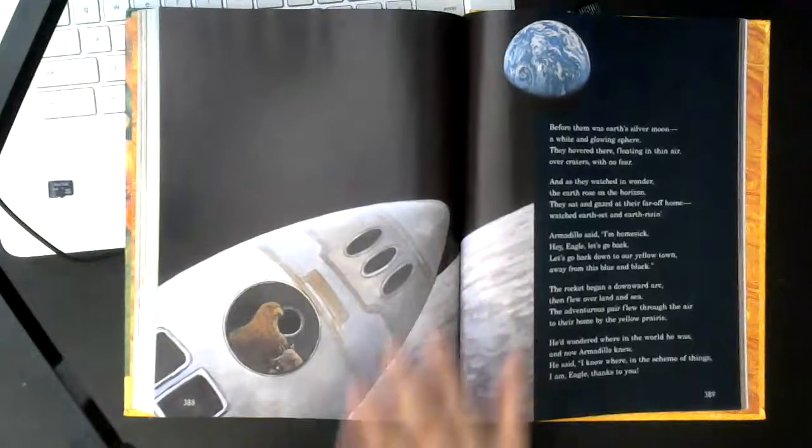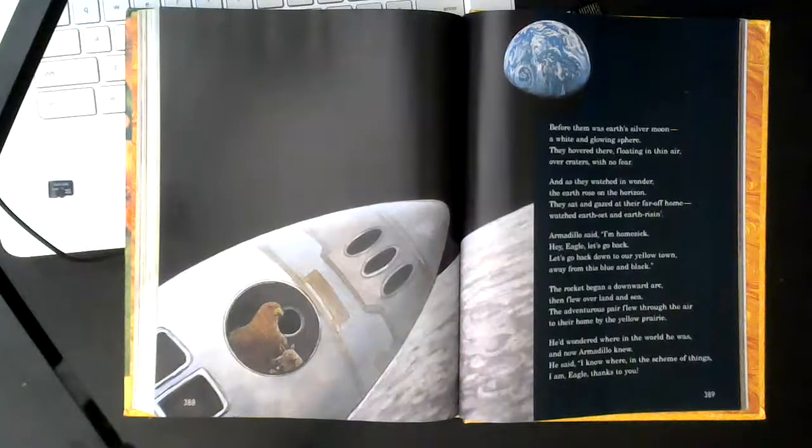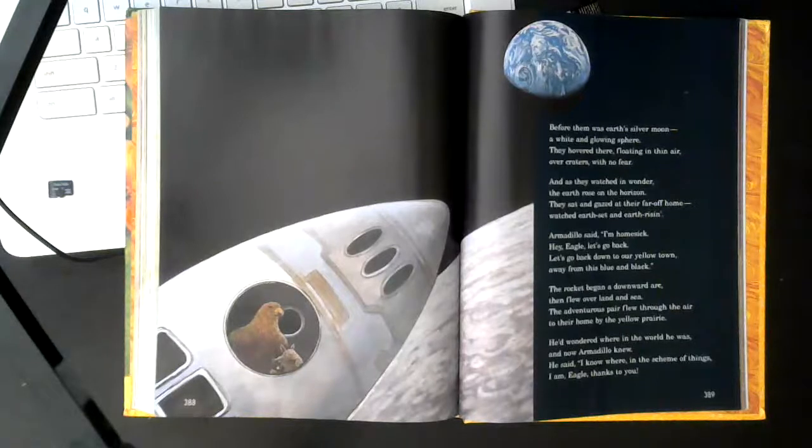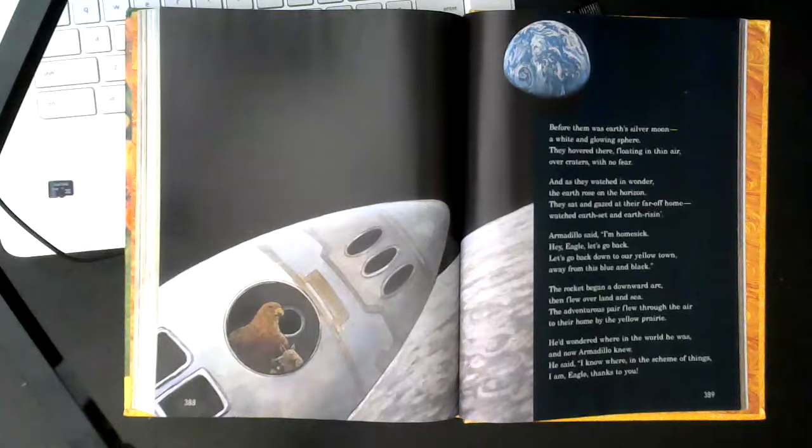Before them was earth's silver moon, a white and glowing sphere. They hovered there, floating in thin air, over craters with no fear. And as they watched in wonder, the earth rose on the horizon. They sat and gazed at their far-off home, watched earth set and earth rising.